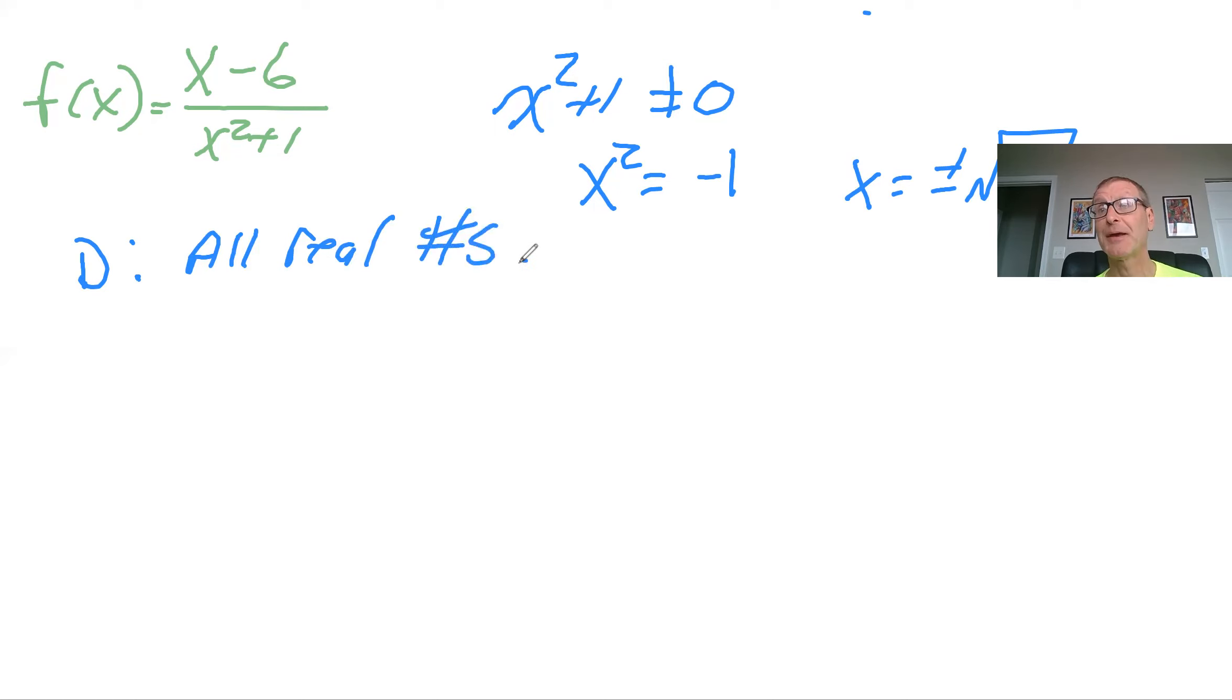When that's the case, guess what happens to your vertical asymptotes? There are none, right? Because again, there's no way to make the denominator 0. So the vertical asymptotes are none.